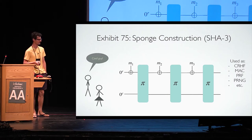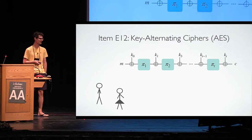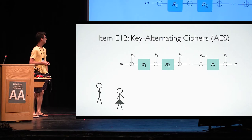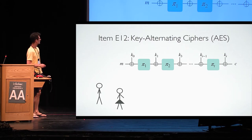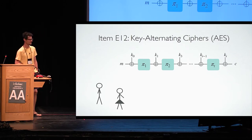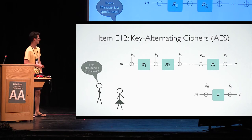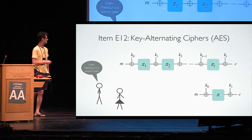It's very impressive. They stare at it and move on to key-alternating ciphers, which is a way to abstract AES. In AES, the key is XORed to the message, then a permutation is applied, then another key is XORed, then another permutation is applied. A special case of this is the well-known Even-Mansour cipher, which is simply one round of this construction.